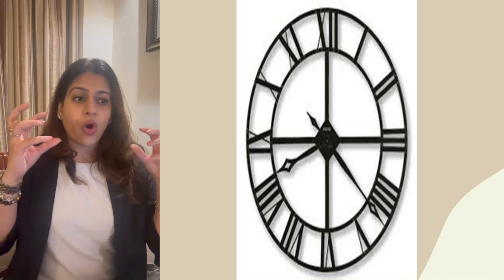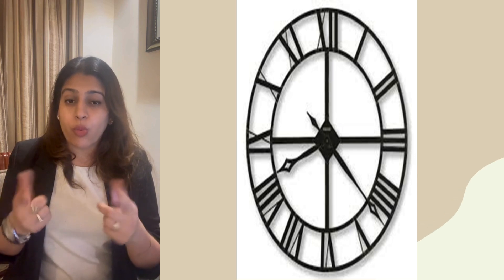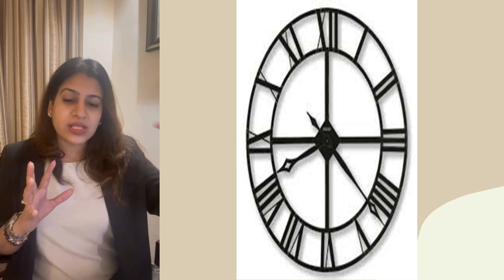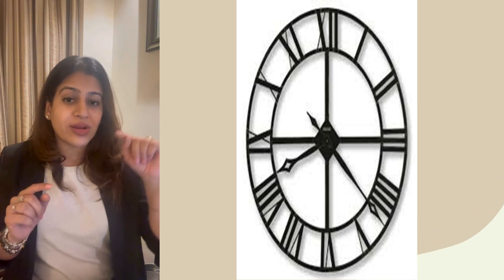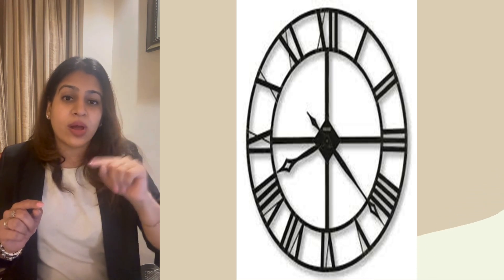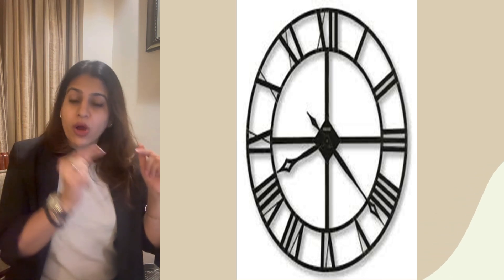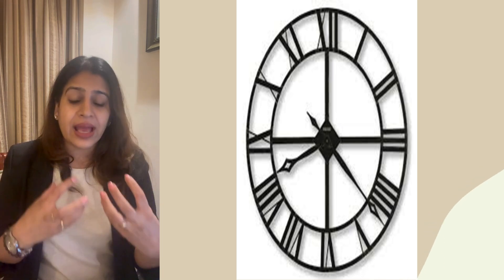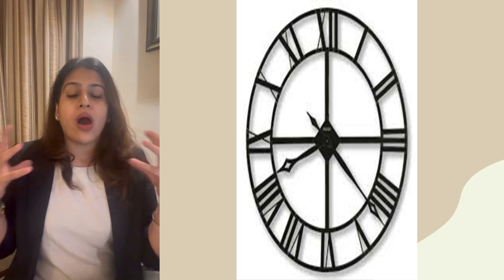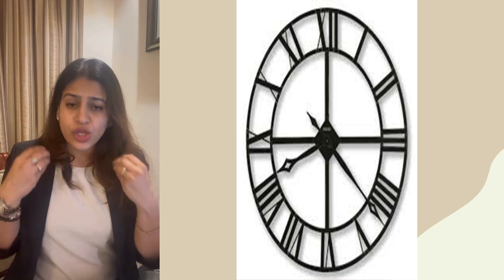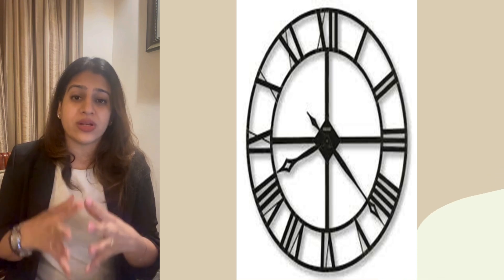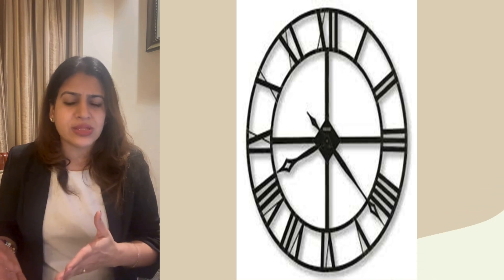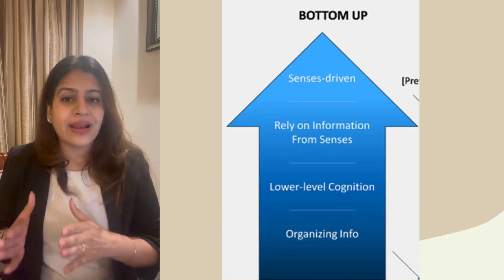...or a rectangle or a door. Like in the wall clock shown here, you can see in the picture that the 4 is written not conventionally as IV, but as 1111. Whatever you are sensing in your environment, you are perceiving it and telling what it is on the basis of your senses. That is called bottom-up processing — it is a very lower-level cognition and it organizes the information.